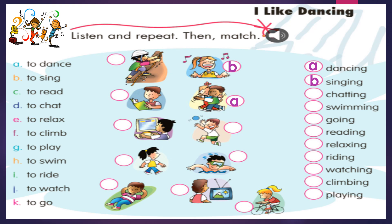We continue. Letter C: to read, leer — reading, leyendo. To read, leer. Reading, leyendo. Y también hemos unido con la imagen, con el niño que está leyendo un libro. Letter D: to chat, charlar — chatting. To chat, charlar. Chatting, charlando. Y también hemos unido con la imagen del niño que está chateando. Very good.